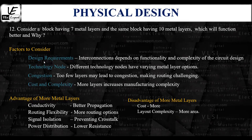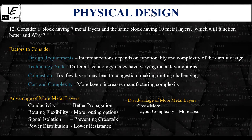Starting with design requirements, the design will demand a certain number of metal layers — say 7 or 10 — for the interconnections of components, depending on the specific functionality and complexity of the circuit. Simpler chip designs with fewer components may require fewer metal layers. Basic logic gates or simple digital circuits may use only a few metal layers. In contrast, complex designs like microprocessors with multi-billion transistors may require additional layers to accommodate routing and connectivity.